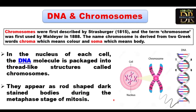What is a chromosome? Chromosomes were first described by Strauss Berger in 1815, and the term chromosome was first used by Waldir in 1888. The name chromosome was derived from the Greek words chroma, meaning colored, and soma, meaning bodies, because they appeared as colored bodies due to the use of Diperkine's aniline dye, becoming blue in color.